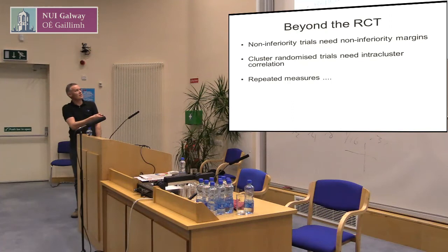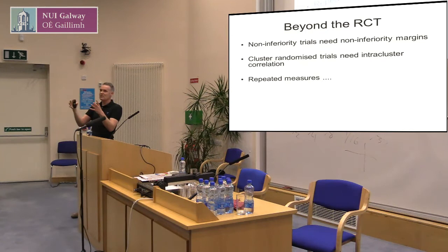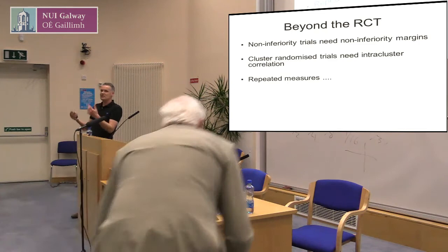Cluster randomised trials — you're going to have to talk about how similar the individuals within the cluster are, and this is going to bump your sample sizes up. Imagine 10 clusters where everybody in the cluster is identical — that essentially means 10 people. Repeated measures become tricky because we're dealing with correlation over time.